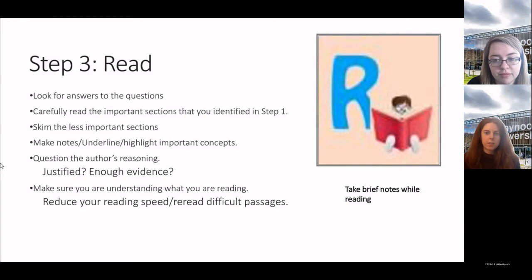Step three is read. Look for answers to the questions. Carefully read the important sections that you identified in step one. Skim the less important sections. Make notes, underline, highlight important concepts. Question the author's reasoning. Is it justified? Is there enough evidence? Make sure you're understanding what you're reading. Reduce your reading speed and reread difficult passages. It also mentions here about taking brief notes while reading. If you have a large article to read, it is a good idea to just highlight key parts or take notes. You won't remember everything because it's just unrealistic to think that you'll take it all in. There's so much information.